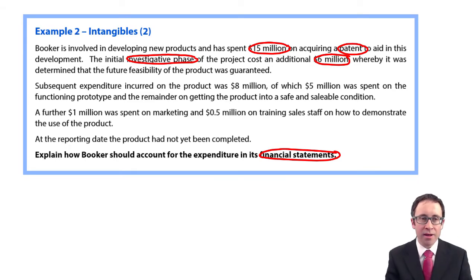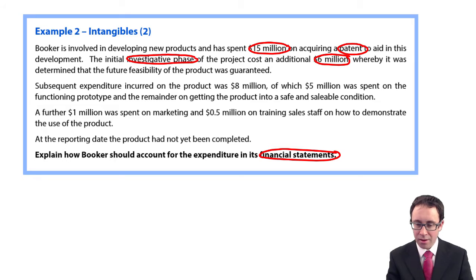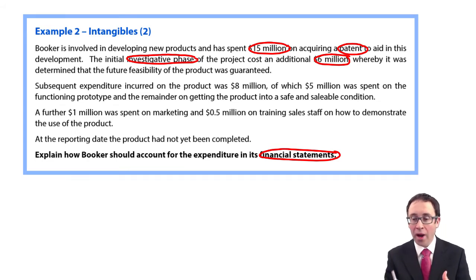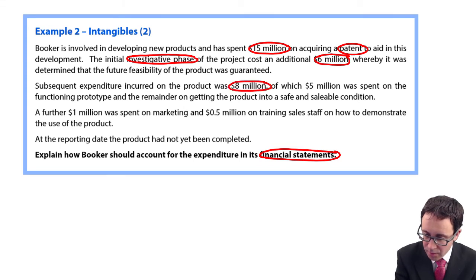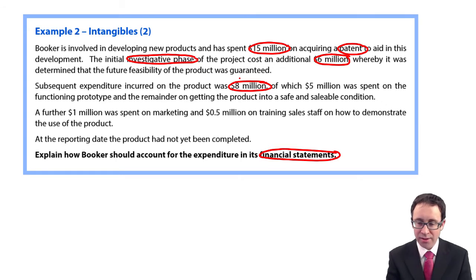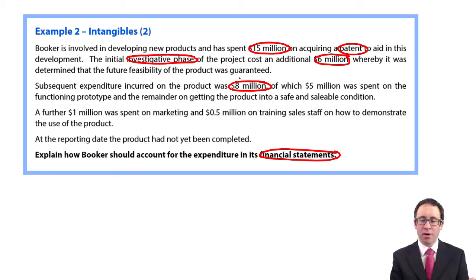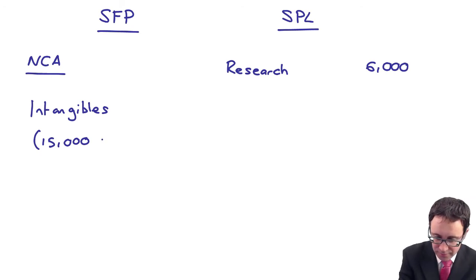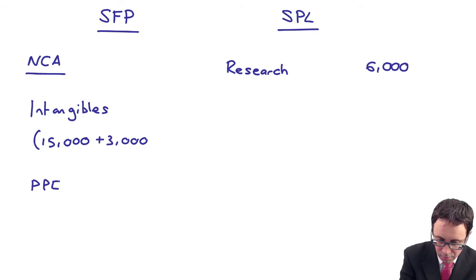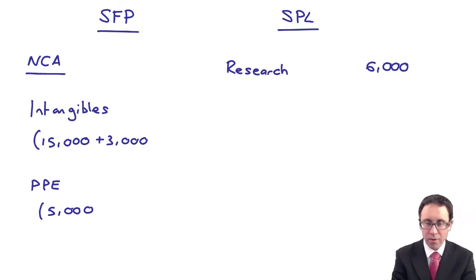Subsequent expenditure incurred on the product was $8 million, of which $5 million was spent on the functioning prototype and the remainder on getting the product into a safe and saleable condition. The whole $8 million is effectively development costs, so that would all be capitalized. You could technically argue that the $5 million spent on the functioning prototype would go through as PPE. So $3 million will go in as an intangible and $5 million will be PPE.